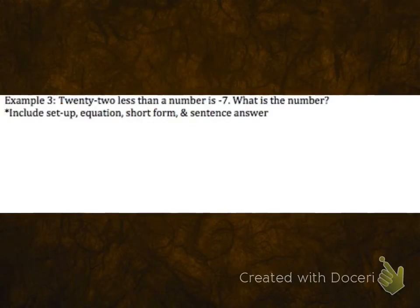In this next example, we're going to set up an equation based on translating. So we have 22 less than a number is negative 7. I'd love for you to pause the video and see if you can write the equation that goes with that. And then replay to check. So 22 less than says that 22 is going to come behind and be subtracted from a number. And we can have any variable stand for that number. Is equals negative 7.